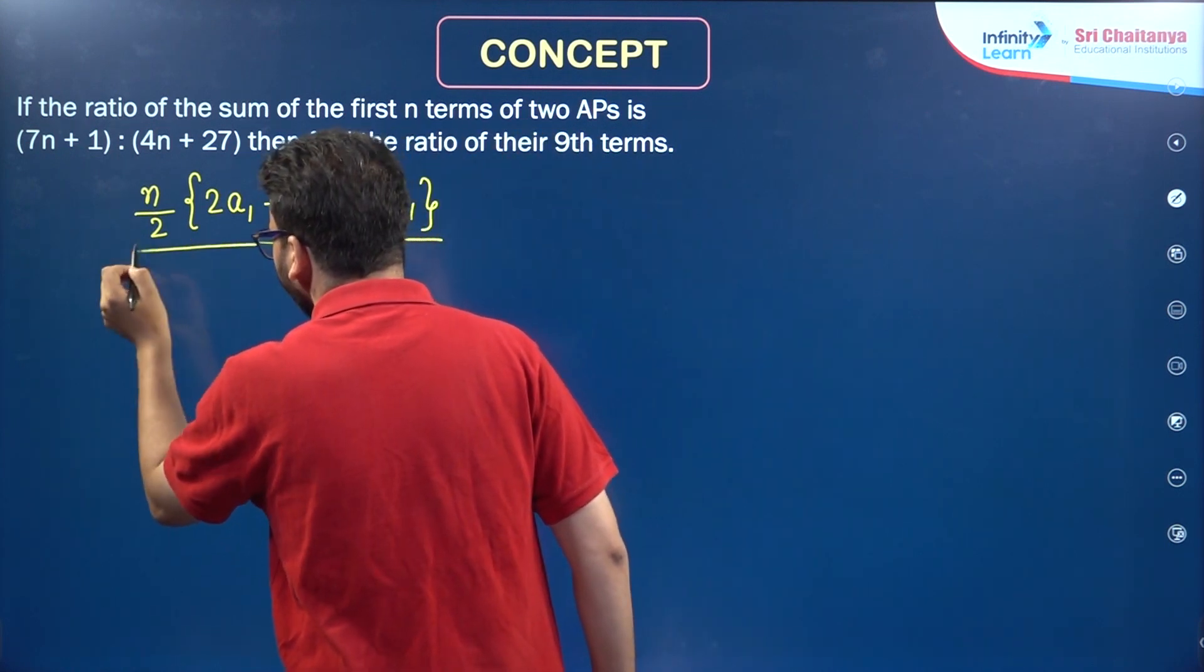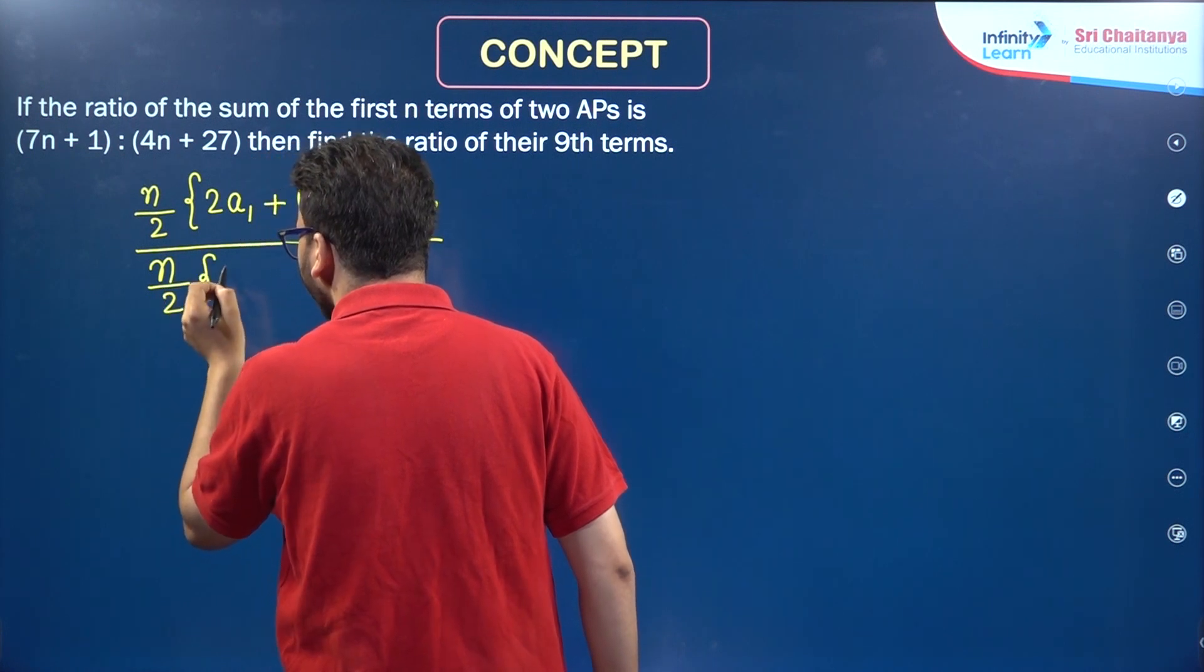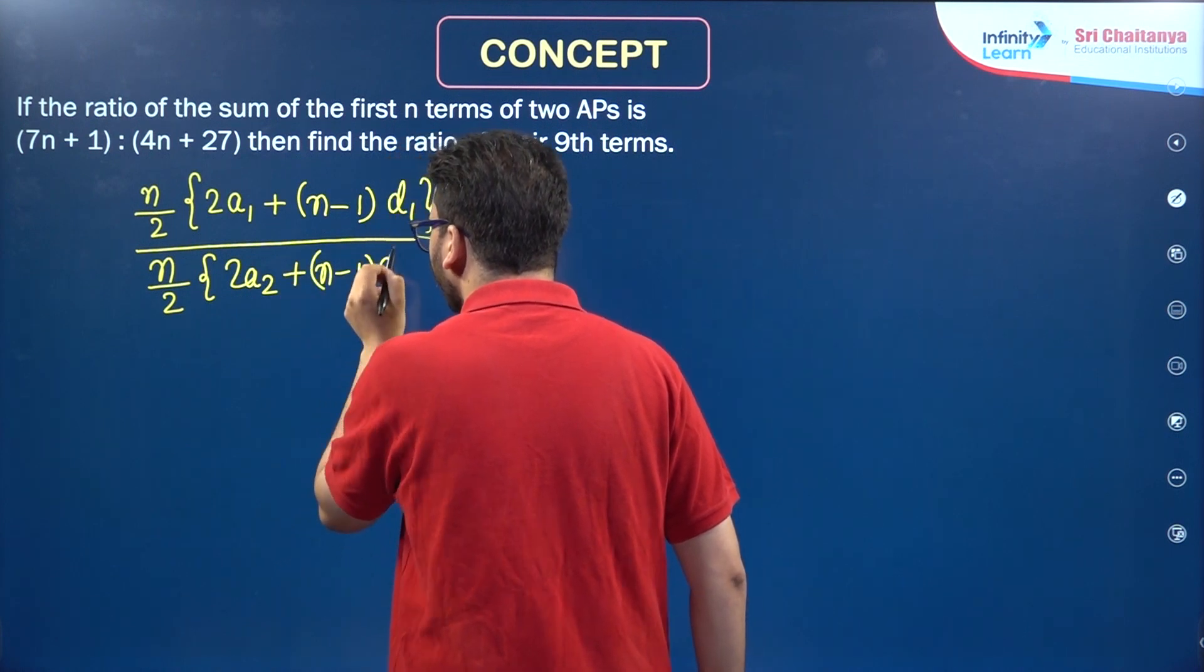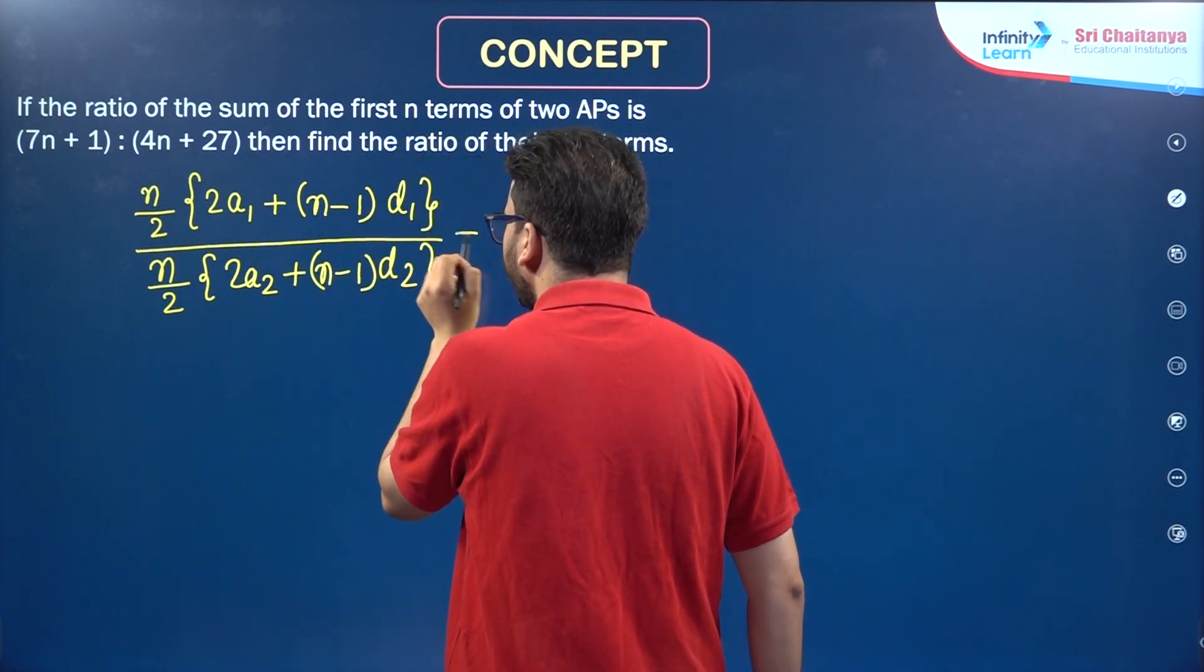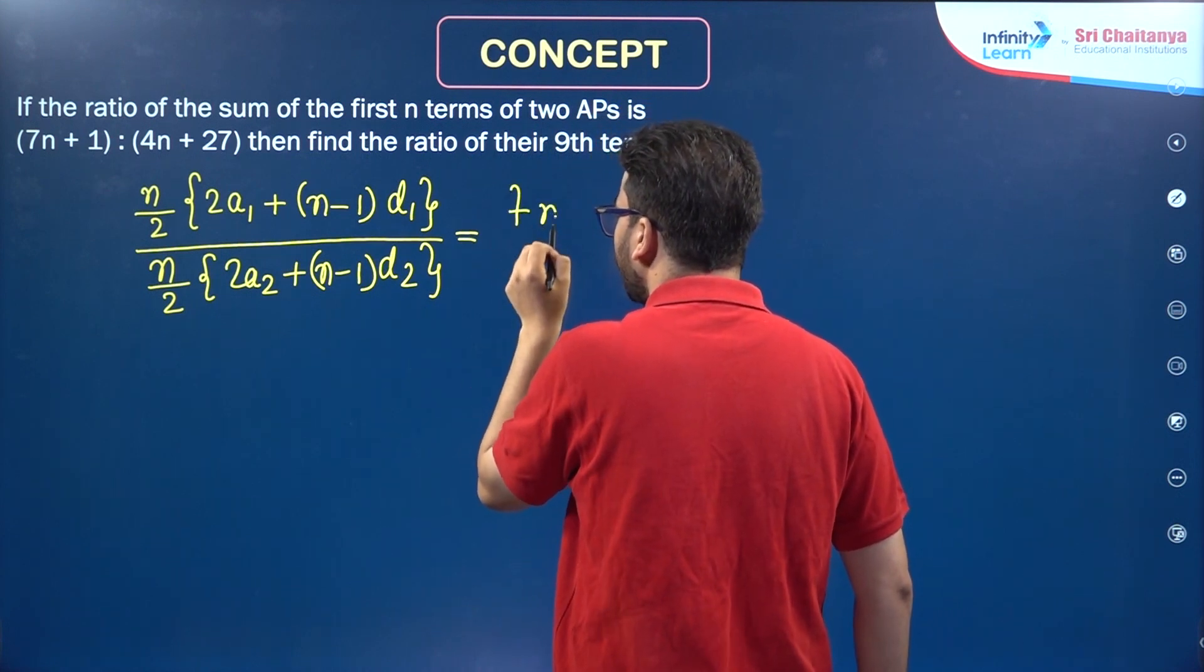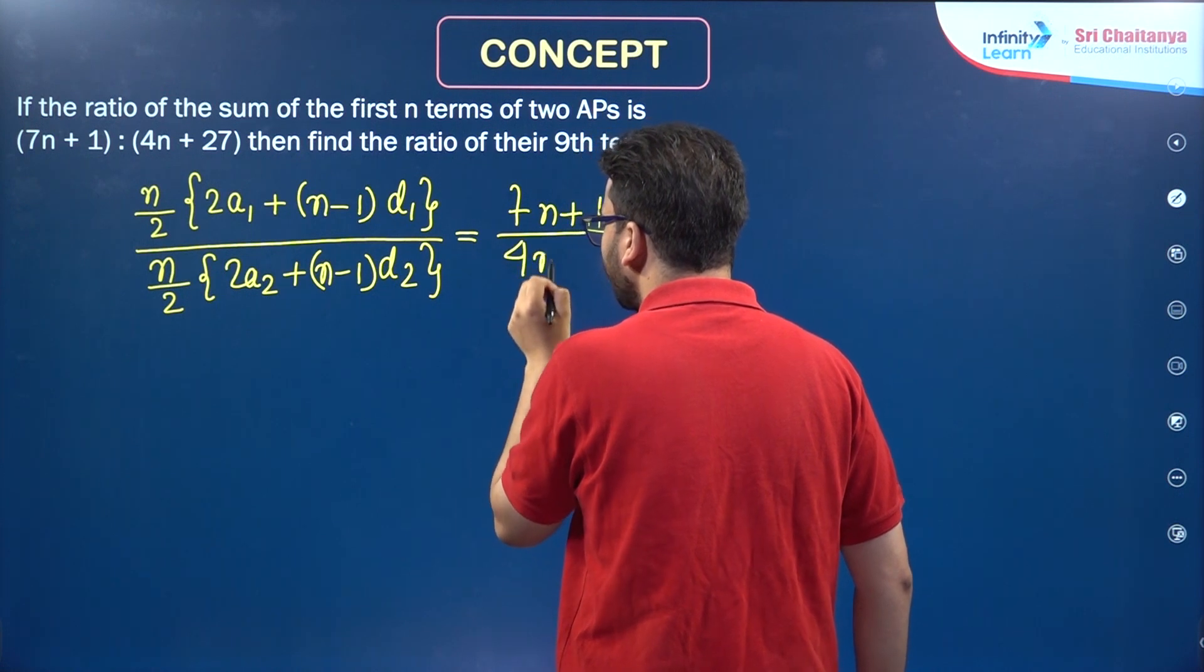divided by sum of the first n terms of the second AP will be n/2 × (2A2 + (n-1)D2). And that is given to be equal to (7n + 1)/(4n + 27).